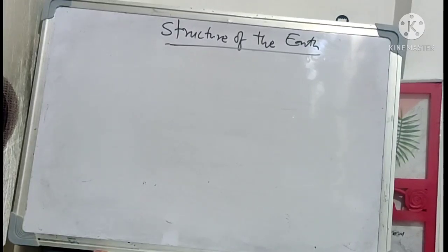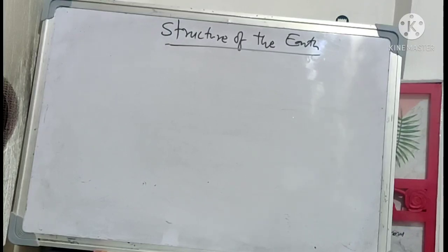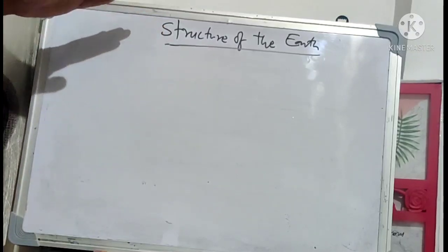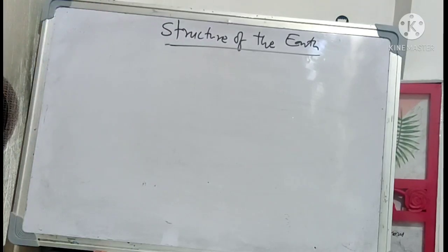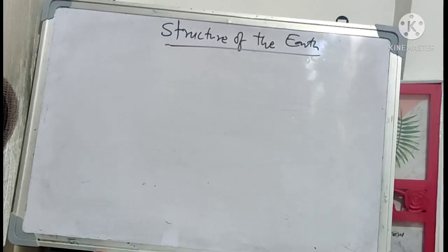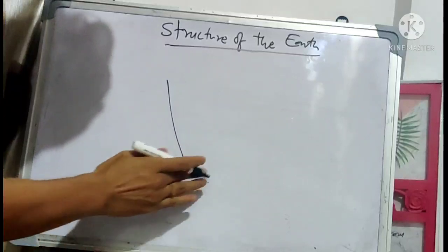In the previous class we discussed the structure of the earth — the interior structure — where we covered the crust, mantle, and core, including their characteristics, density, and thickness. We'll do a brief summary of the previous class before proceeding to the next topic. Earth's interior is classified into three major groups: crust, mantle, and core.